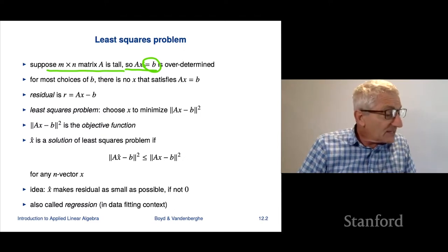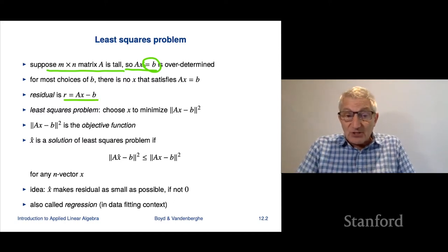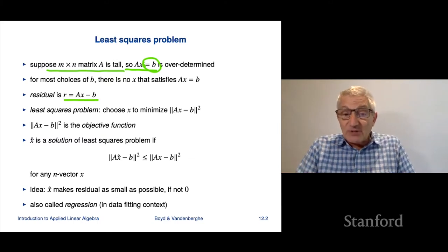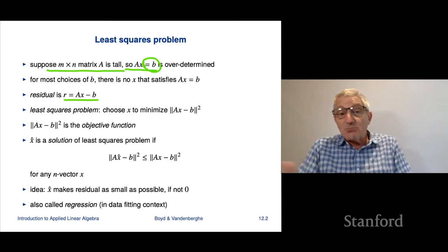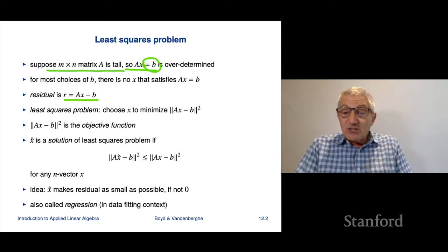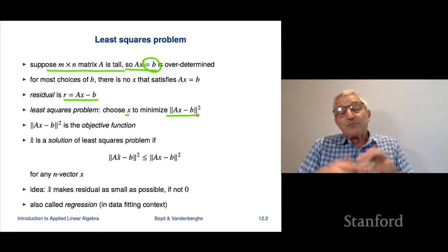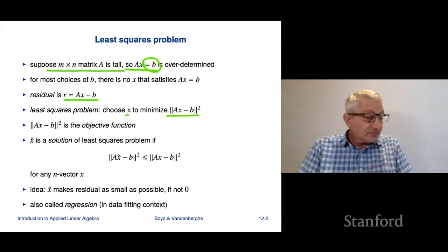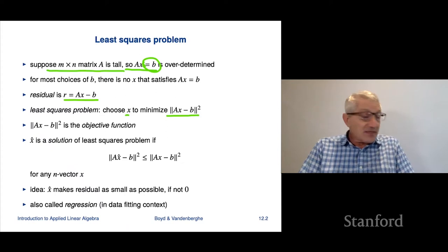So what we're going to do is talk about the residual r, which is Ax minus B — the amount by which the equation doesn't hold. If r equals 0, that means x is actually a solution of Ax equals B. Now when A is tall, for most B there isn't an x that makes the residual 0. So we're going to choose x that makes the residual as small as possible, in norm or norm squared — minimizing the norm is the same as minimizing the norm squared.